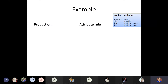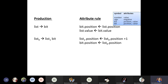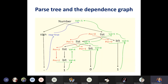For example, in the binary number example — accepting a binary number — for the first rule, 'number gives sign list', the action initializes a variable to zero with an if-statement for true and false cases. Similarly, for the production rule 'sign gives positive', the action assigns sign.negative to false. Like this, for all other rules, certain actions are applied. We generate the parse tree, and along with it we mention the attributes — we call this the dependence graph.